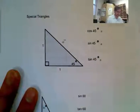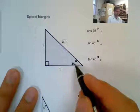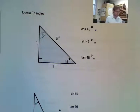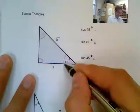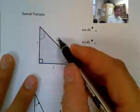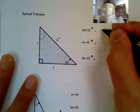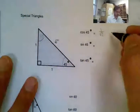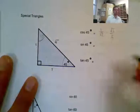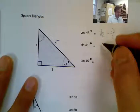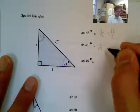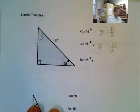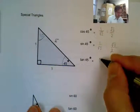Here is my special triangle: sides of 1 and 1, angles of 45 and 45. If I look at cos 45, it's adjacent over hypotenuse, which gives 1 over √2. Since we don't want a radical in the denominator, that's the same as √2 over 2. Sin 45 is 1 over √2, which is also √2 over 2. And tan 45 is opposite over adjacent, which equals 1.